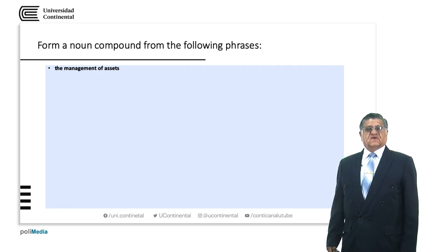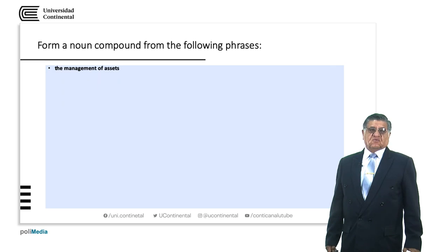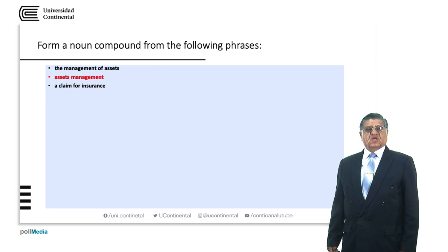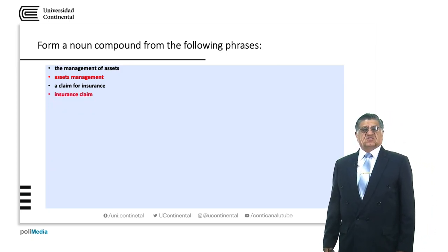We are going to form compound nouns from phrases as we did at the beginning. The management of assets — we are talking about management, but in this case it refers to assets. So we form the noun compound 'assets management'. A claim for insurance — we are talking about a claim that in this case is for insurance. So we have 'insurance claim'.